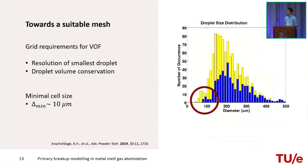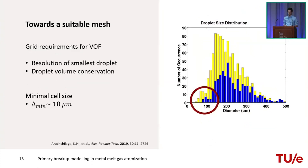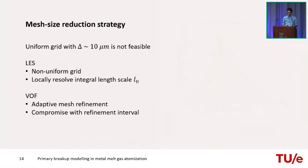For VOF requirements, the mesh size must be sufficient to resolve the smallest expected droplets after primary atomisation. These droplets are already quite small even after primary atomisation, requiring a minimum cell size of about 10 micrometres. A uniform grid at this resolution would require approximately 50 billion cells — which is not feasible since multiple simulations are needed to study process parameter influence on droplet size distribution.